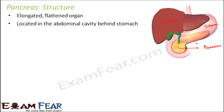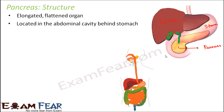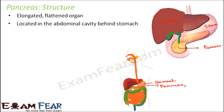The pancreas is located in the abdominal cavity behind the stomach. Just behind the pink colored stomach, you can see a small portion of the yellow colored structure — that is the pancreas hidden behind the stomach.